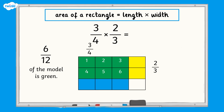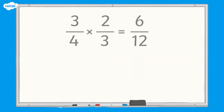This means that three quarters of the rectangle multiplied by two thirds of the rectangle equals six twelfths of the rectangle. Three quarters multiplied by two thirds equals six twelfths.